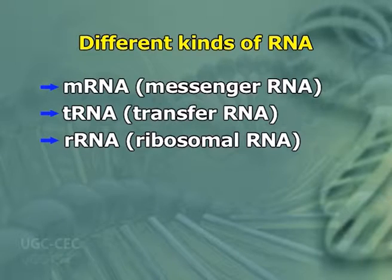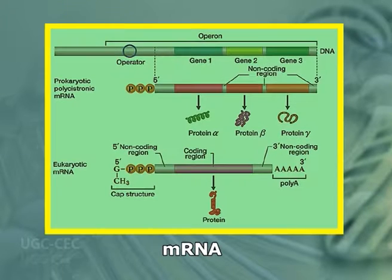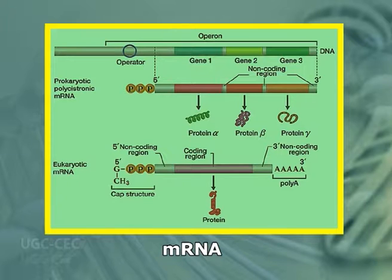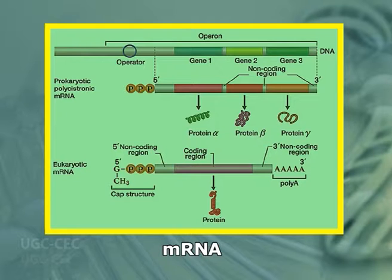First, we discuss messenger RNA. The mRNA is synthesized from DNA. In eukaryotes, it is synthesized as heterogeneous nuclear RNA in the nucleus. During processing, hnRNA liberates the functional mRNA which enters the cytoplasm for protein synthesis. The eukaryotic mRNA is capped at the 5-prime terminal by 7-methylguanosine triphosphate. This capping helps to prevent mRNA from hydrolysis by 5-prime exonucleases and also helps in recognition of mRNA for protein synthesis.